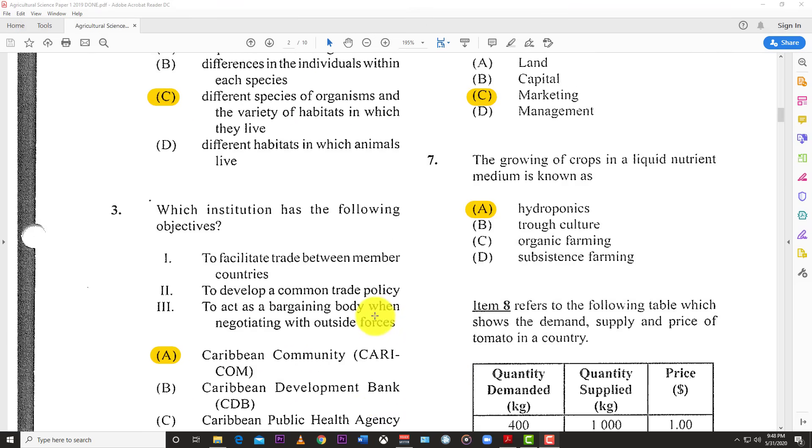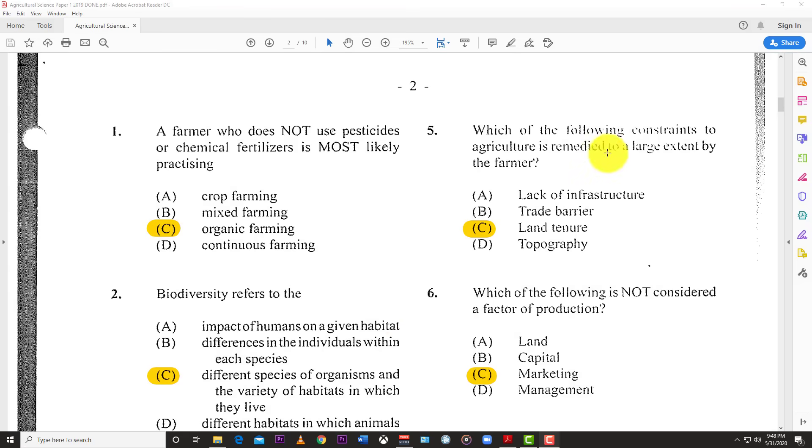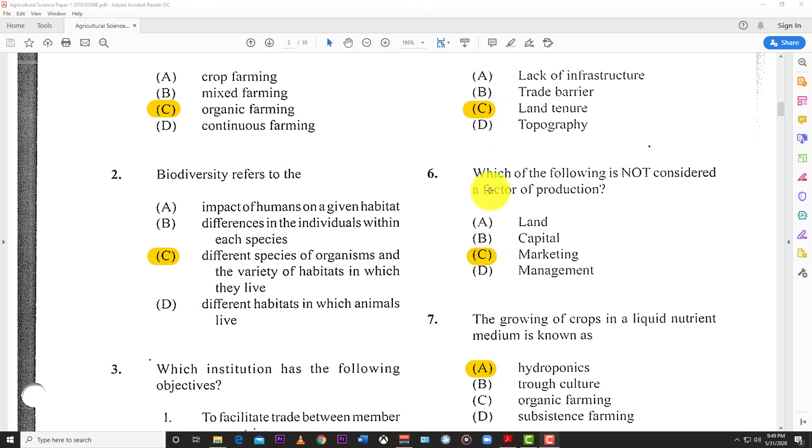Number 4: An agronomist is a person who specializes in the growth and management of crops. Number 5: Which constraint to agriculture is remedied to a large extent by the farmer? The answer is land tenure. Lack of infrastructure, trade barriers, and topography are more government or nature issues, but land tenure is where the farmer goes and tries to own some land. Number 6: Which of the following is not considered a factor of production? Marketing is not. Land, labor, capital, and entrepreneurship or management are factors of production.